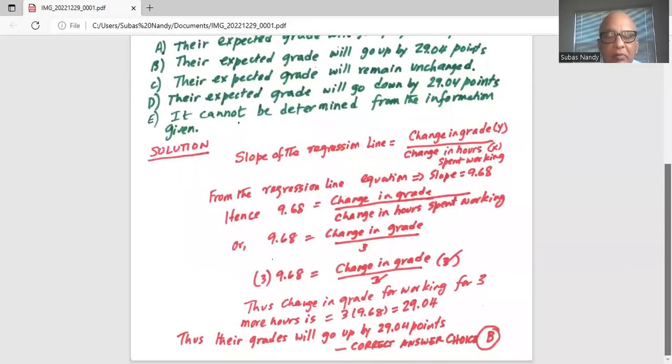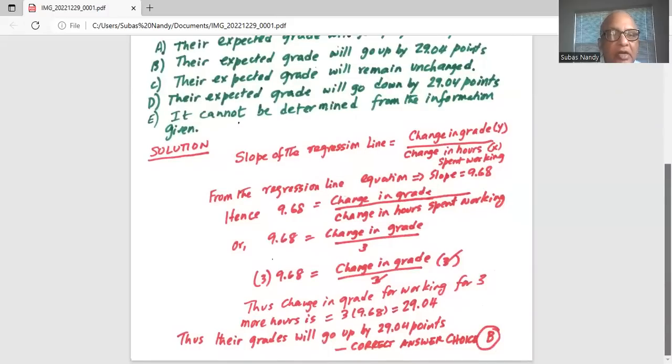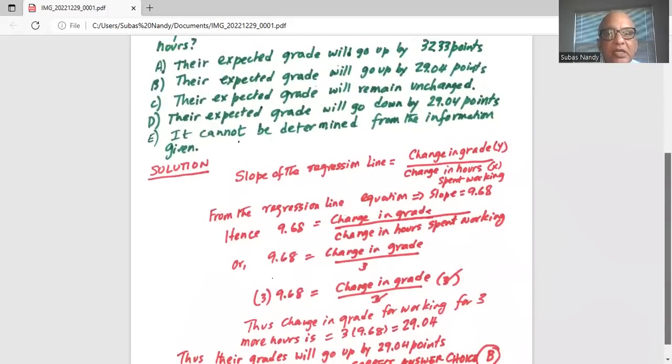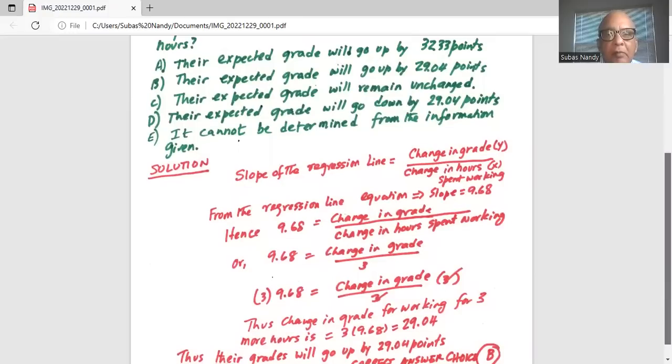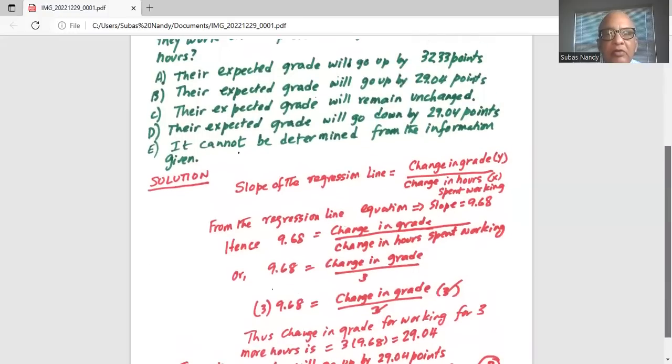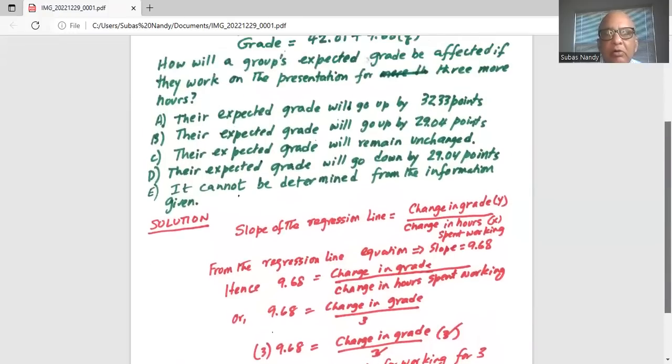Hence their grade will go up by 29.04 points. Correct answer is choice B which says their expected grade will go up by 29.04 points if they work for three more hours.